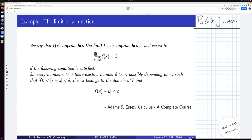If the following condition is satisfied, and then comes something which is supposed to be logic. So it says for every number epsilon greater than zero, there exists a number delta greater than zero, possibly depending on epsilon—I would say normally depending on epsilon—such that if a condition holds, then x belongs to the domain of f and this condition holds.